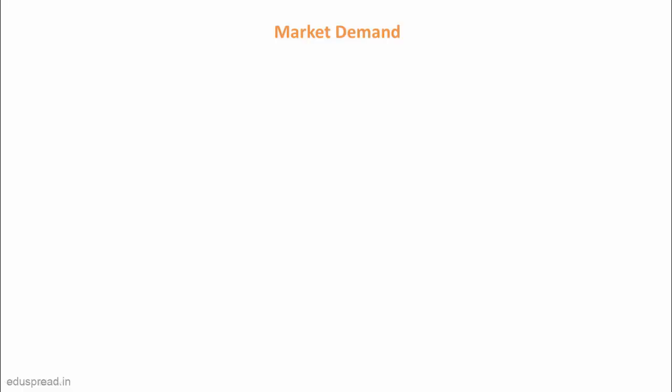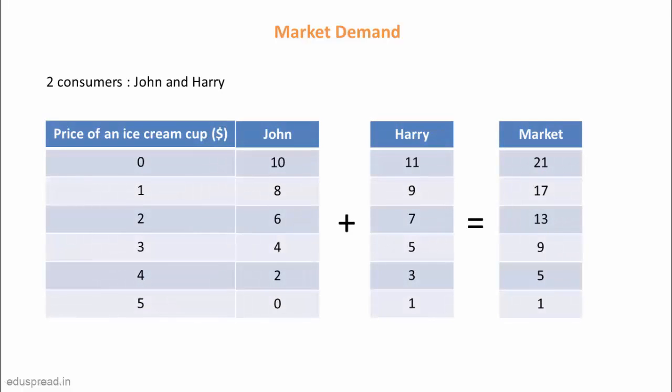We know that a market has many consumers of a good. We can expect to have millions of consumers who eat ice cream. But just for the sake of simplicity, let us assume that there are only two consumers who eat ice cream — John and Harry. And this is how their demand schedule looks like.